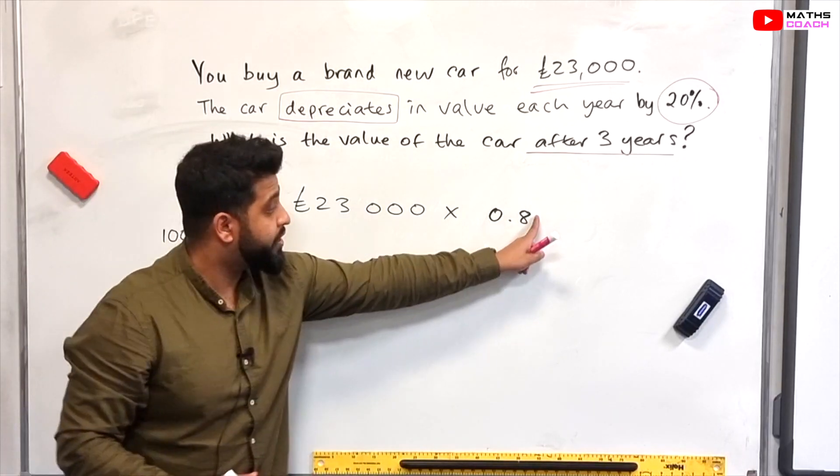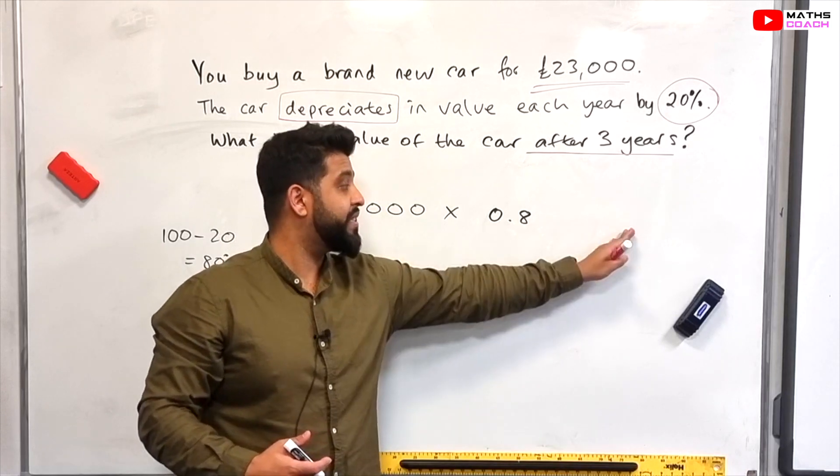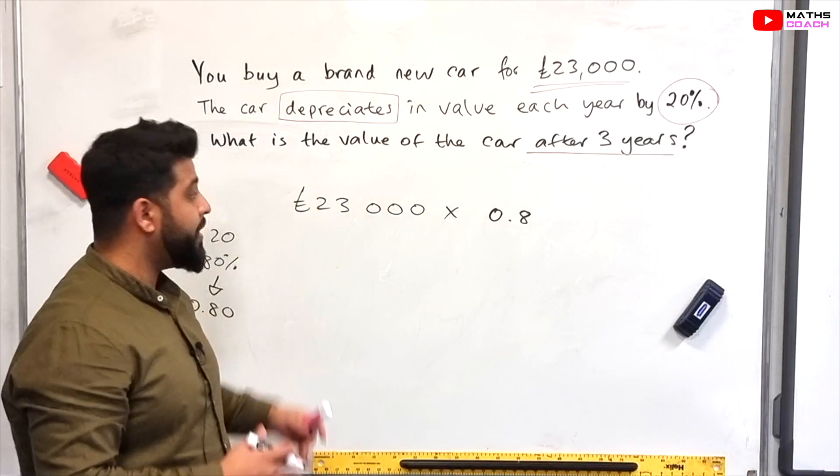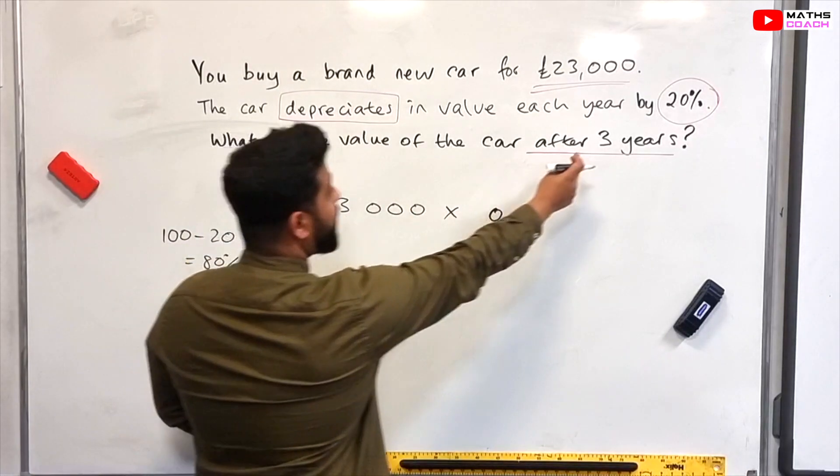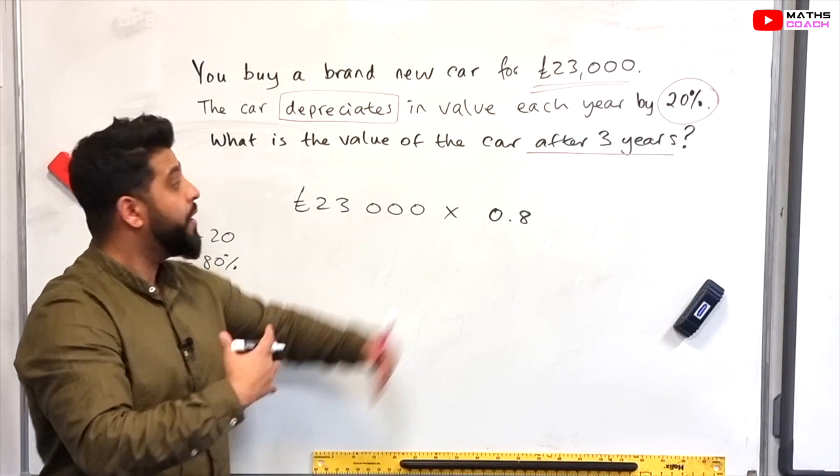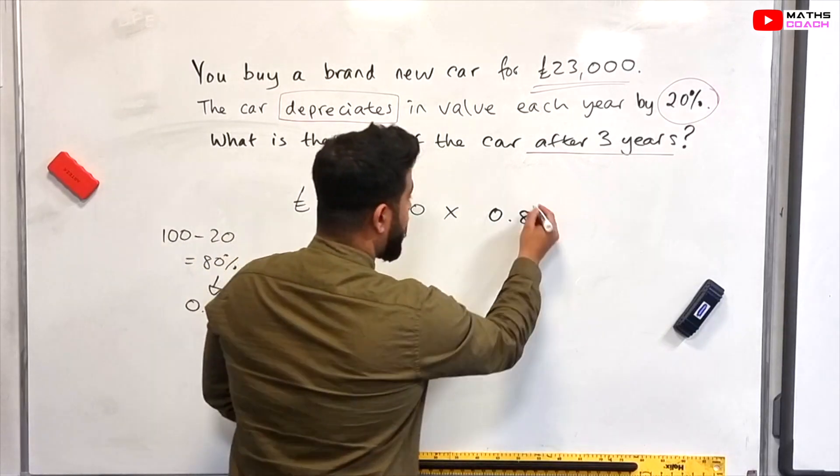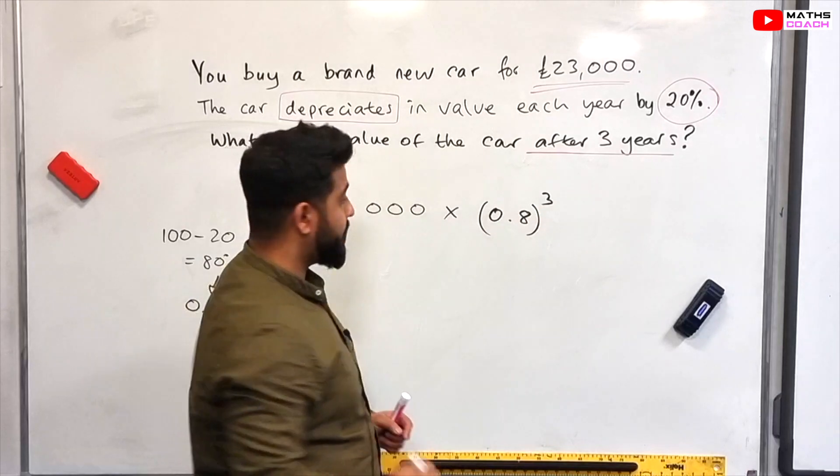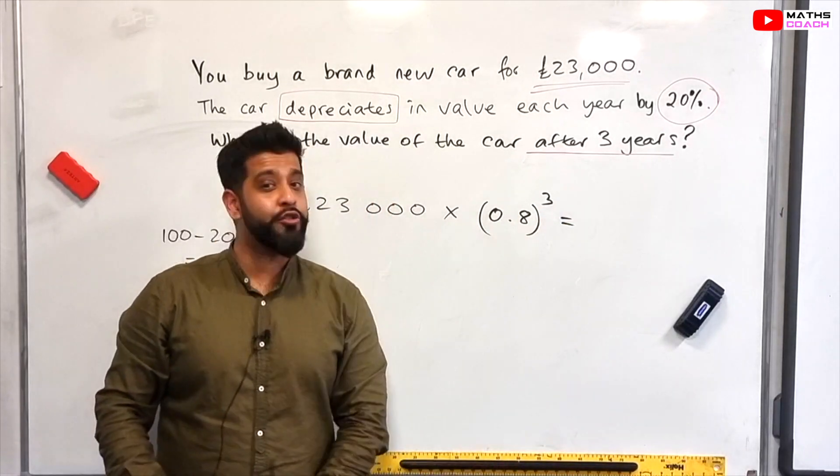You can write 0.80 here but it's not really necessary because 0.8 is the same as 0.80 anyway. Right so now how long is this? This is compound interest, so every year it will happen. It will just keep depreciating by 20% on the current value of the car. So we will add to the power of 3 here. Again reach for your calculators and stick this straight into that calculator.